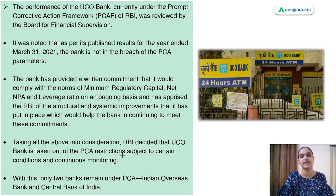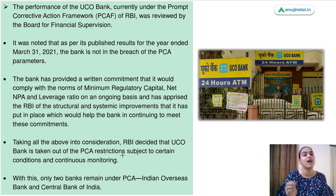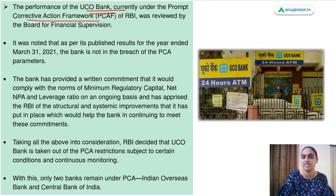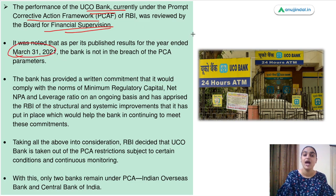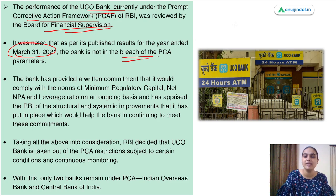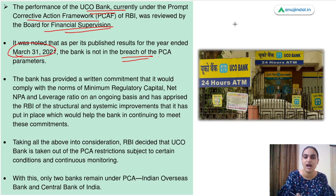Recently, UCO Bank has been taken out of the PCA framework. UCO Bank was previously under the PCA framework and RBI had imposed restrictions on it. A review was done by the Board of Financial Supervision, which assessed the bank's performance based on results published on 31st March 2021. What was observed was that the bank was not in breach of the PCA parameters — capital, net NPA ratio, leverage ratio — and was working within the thresholds.